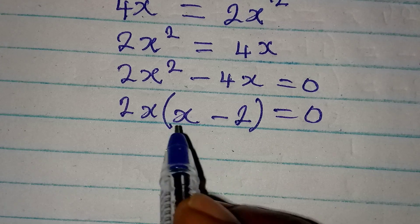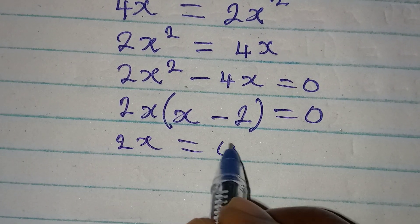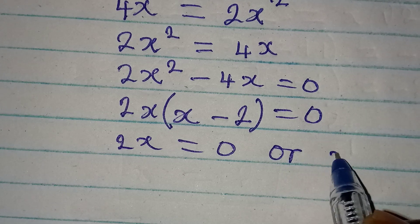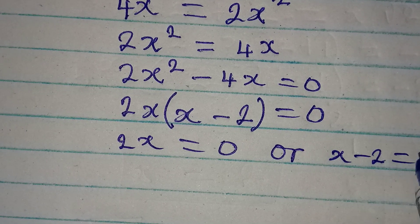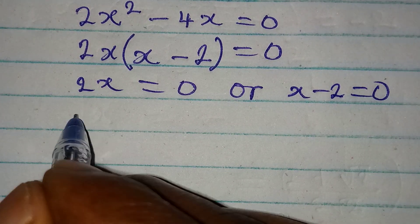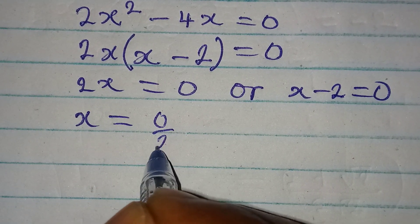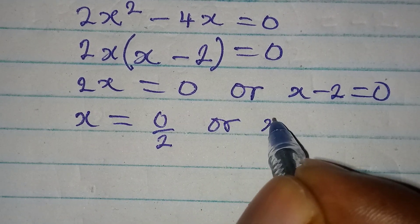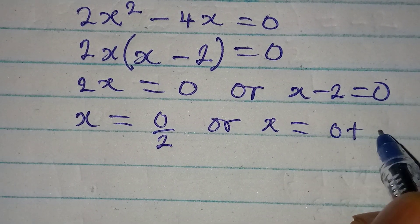Applying zero product rule, 2x is either equal to 0 or x minus 2 is equal to 0. So from here, x is equal to 0 over 2, or x is equal to 0 plus 2.